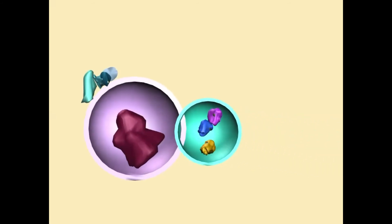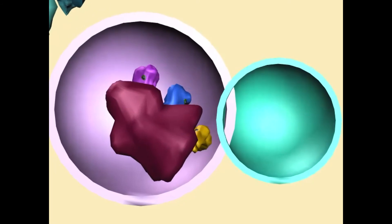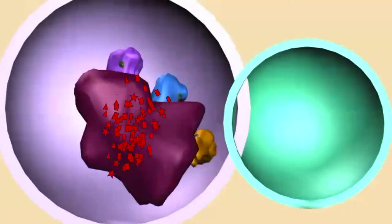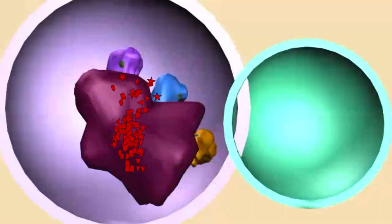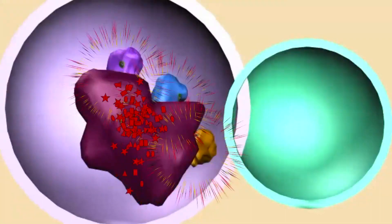Third, the isolation membrane elongates and spreads over the target to include it inside this double membrane vesicle. And then fourth, this autophagosome fuses with the lysosome, whose digestive enzymes then destroy the contents of the autophagosome.